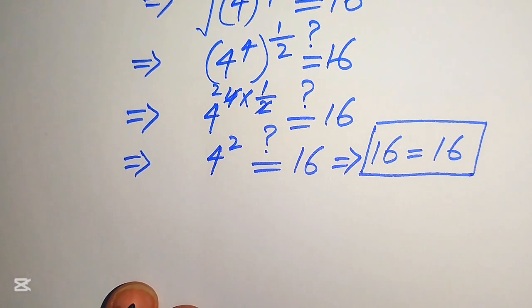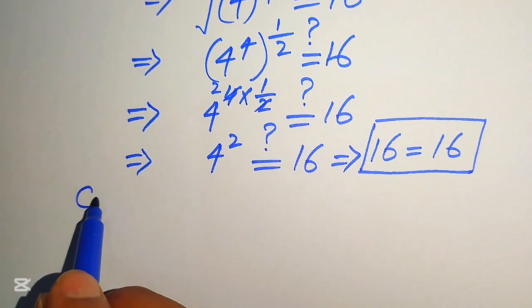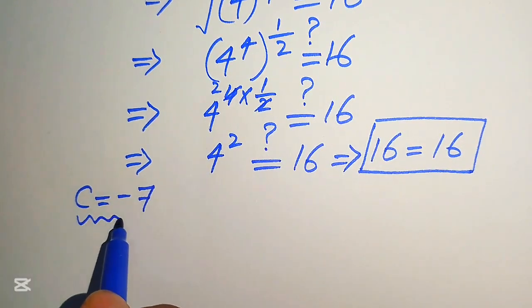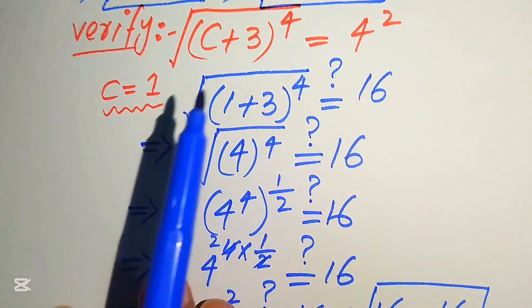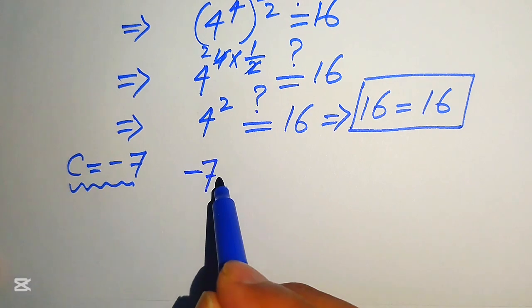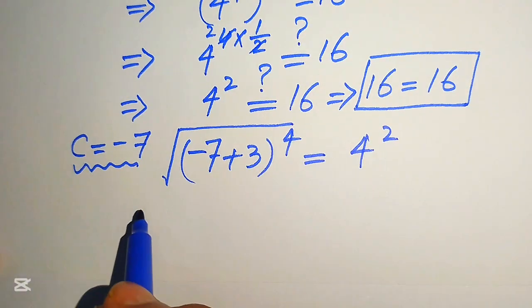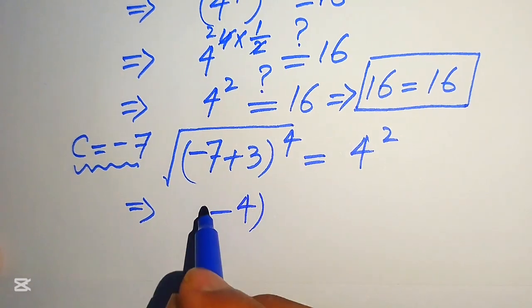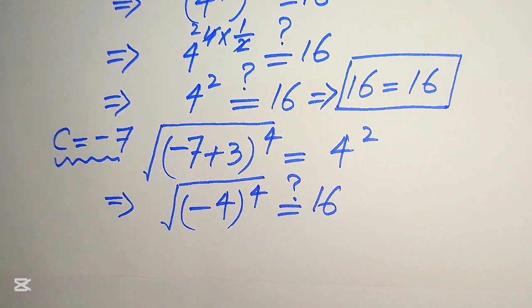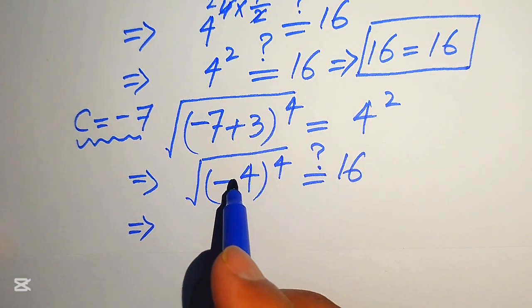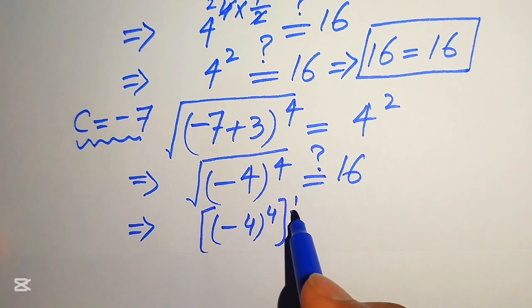Now we check the second value, c equals minus 7. Substituting into the left hand side of the given equation: the square root of (minus 7 plus 3) to the power of 4, which equals the square root of (minus 4) to the power of 4. Converting to exponential form, this is (minus 4) to the power of 4, to the power of 1 over 2.